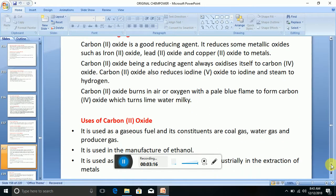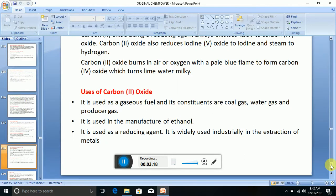Now, what are the uses of carbon (II) oxide? It is used as a gaseous fuel, and its constituents are coal gas, water gas, and producer gas. It is used in the manufacture of ethanol. It is used as a reducing agent. It is widely used industrially in the extraction of metals.